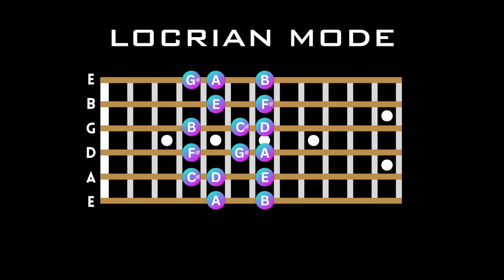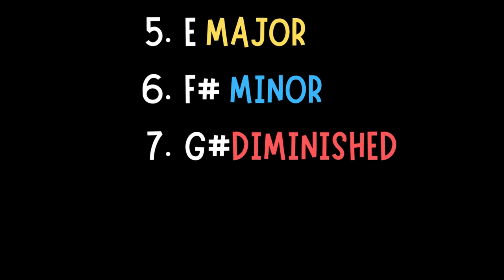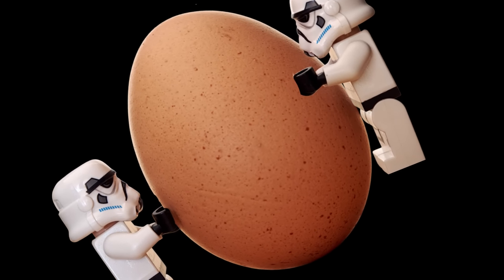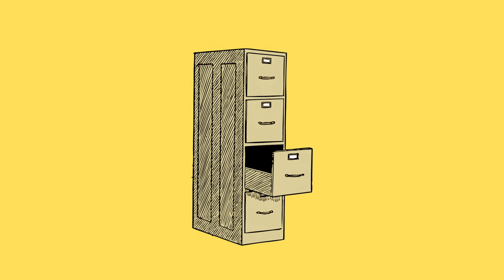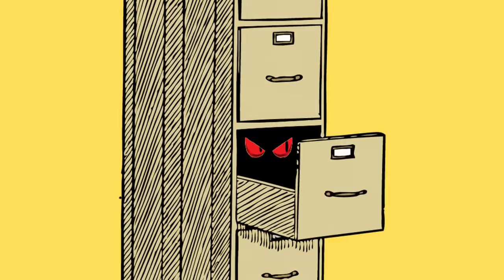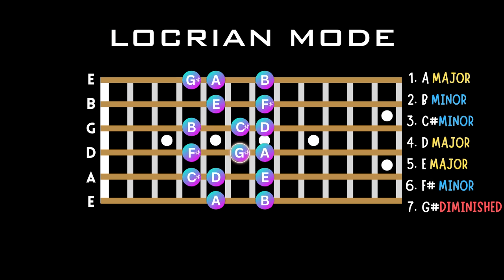And finally we have the seventh mode of the major scale, which is referred to as the Locrian mode. This is built from the seventh note in the major scale, and the seventh chord is a G sharp diminished chord, which leaves us with a very unstable sounding mode — as no matter how hard you try, you won't be able to resolve. So it's probably best to just avoid this one and put it in the Stranger Things locker. Let's take a listen to the very dissonant Locrian mode over its corresponding chord — in this case a G sharp diminished chord.